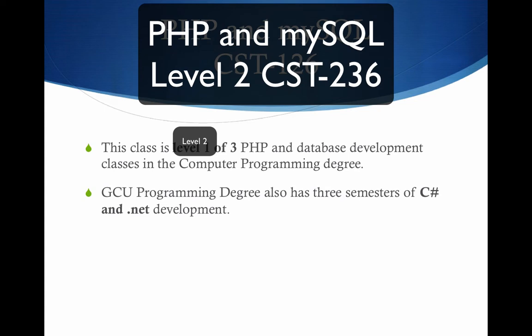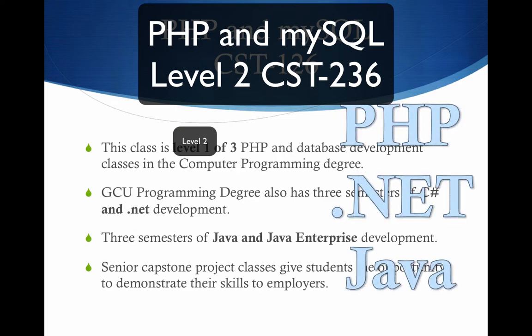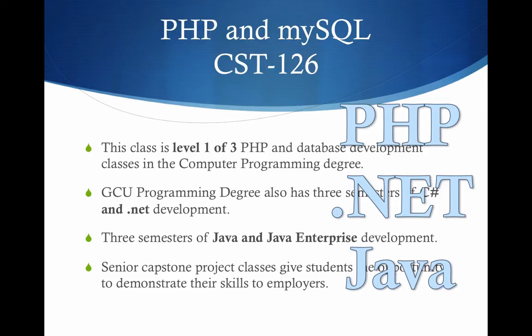Students that are programming majors would also receive three semesters of C-sharp and .NET development, as well as three semesters of Java and Java Enterprise. In our senior year, we have capstone projects, which give students the opportunity to explore their skills in their own specialties. So PHP, .NET, and Java are what we speak here at GCU.